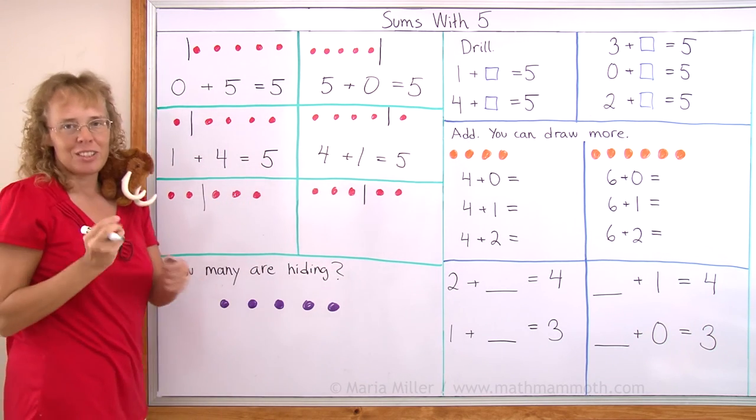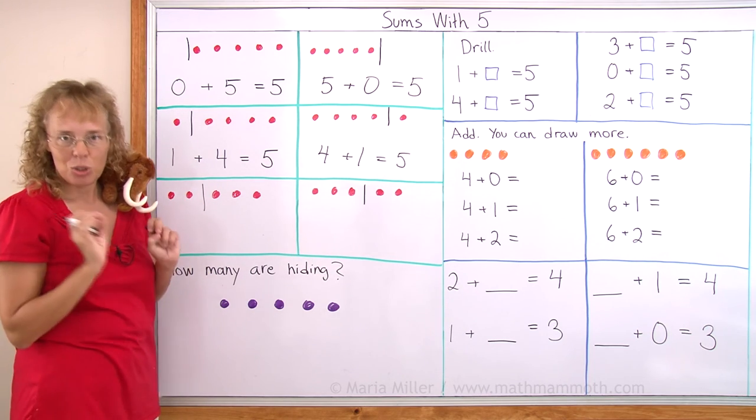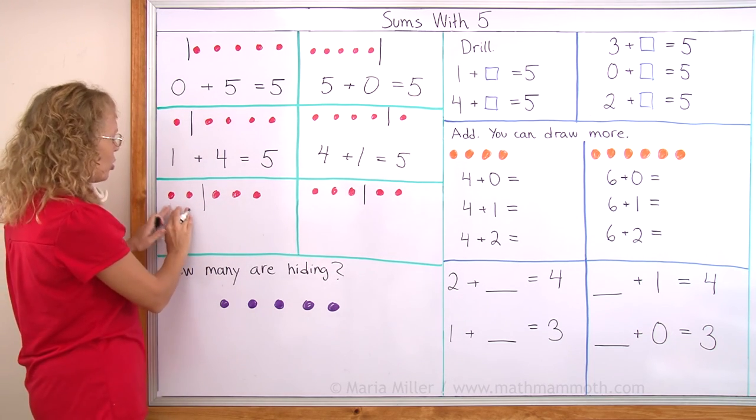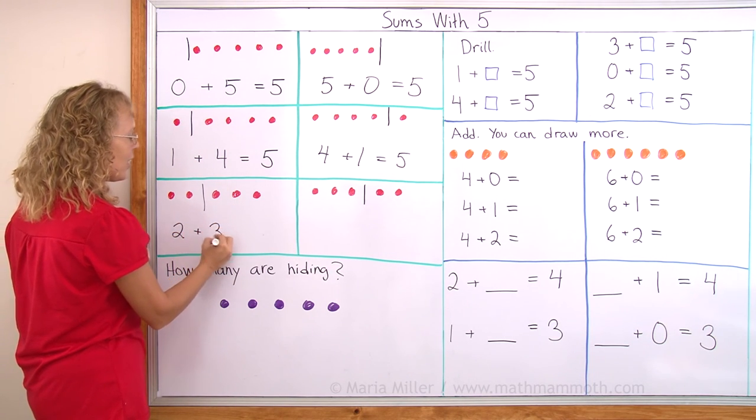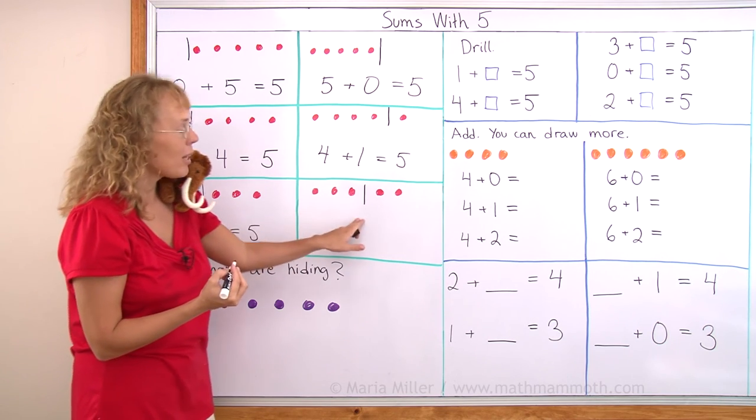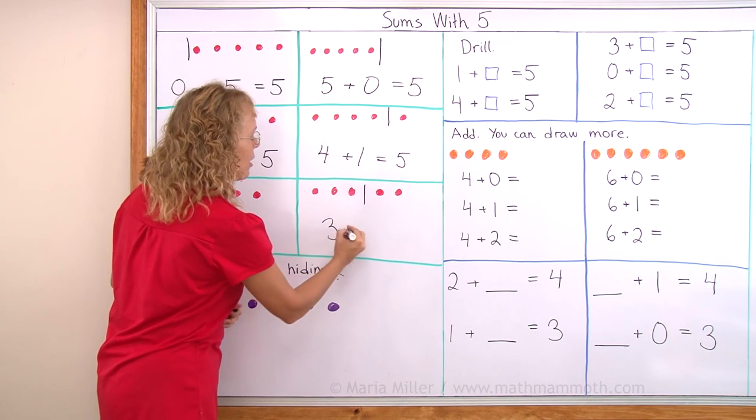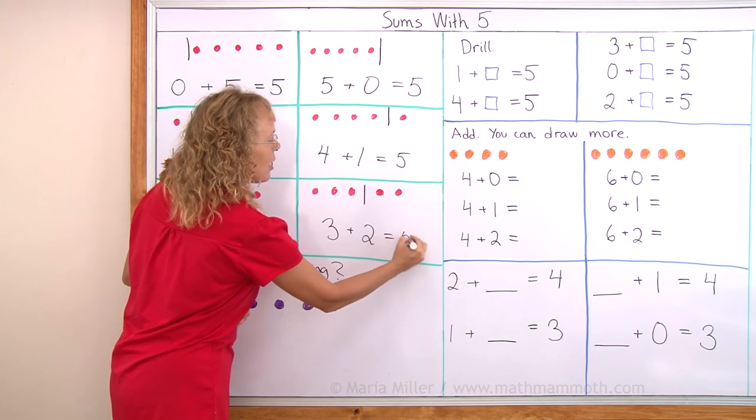And one more different way to have five strawberries in two different groups. It is that two on this side and three on that side. Two plus three equals five. And over here three plus two. Three plus two equals five.